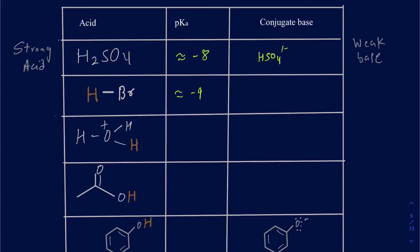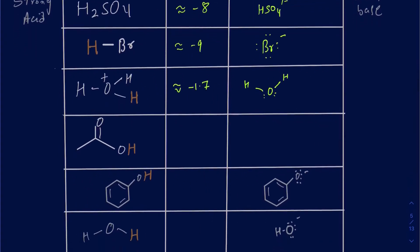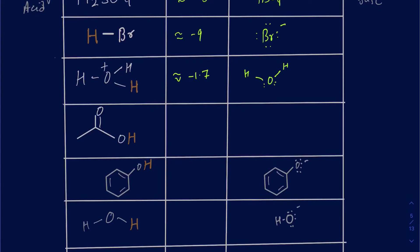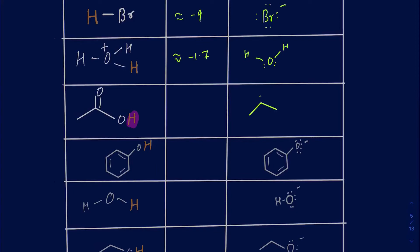The next one is hydronium. The pKa of hydronium is approximately negative 1.7 — still a strong acid. After removing the proton from hydronium, this is what the conjugate base looks like. For acetic acid, CH3COOH, we have the acidic proton; after removing it, the conjugate base looks like this. The pKa of acetic acid is approximately 4.74, so the pKa is getting bigger, meaning we're moving into weaker acid territory.